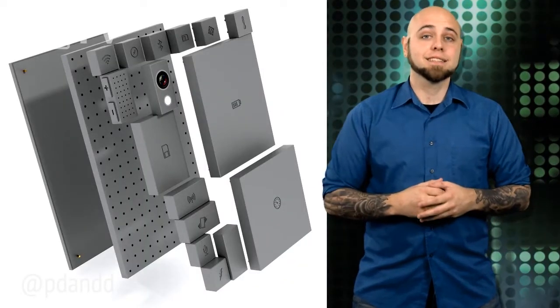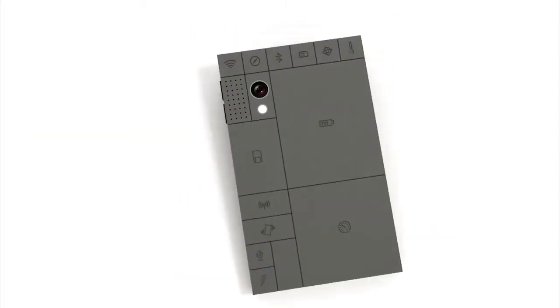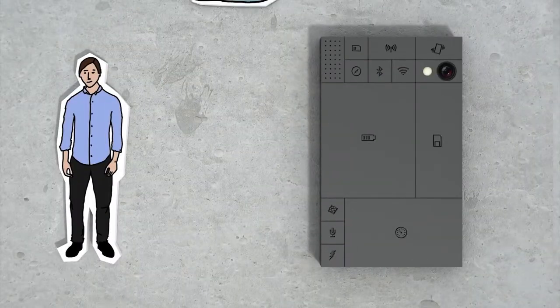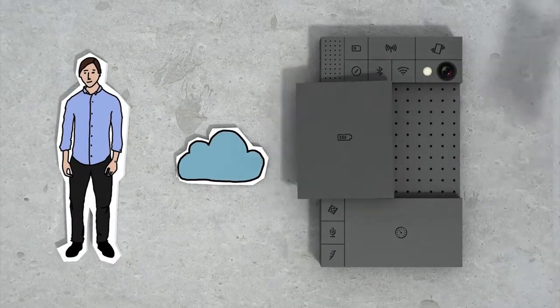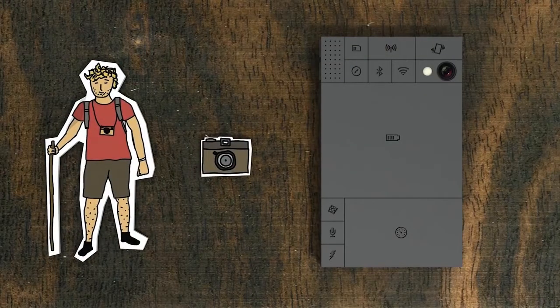The idea behind phone blocks is that you can replace any given component at any time, whether there's an upgrade or part breaks. This also gives freedom to those that are into customization. For instance, if you do more stuff in the cloud, the storage module on the phone can be minimized or swapped out completely for a bigger battery or a nicer camera.